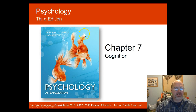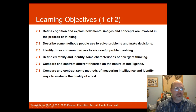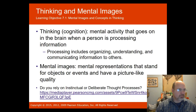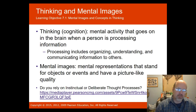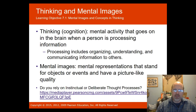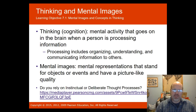Welcome to Chapter 7: Cognition and Language. These are the objectives we'll be covering over this unit. First, let's talk about thinking — another word for thinking is cognition. It's mental activity that goes on in the brain when a person is processing information. Processing includes organizing, understanding, and communicating information to other people. Mental images are mental representations that stand for objects or events that have a picture-like quality.